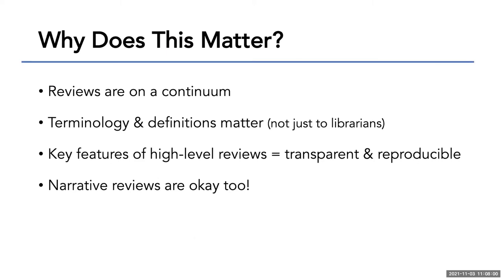Why does the distinction between these terms matter? Reviews are on a continuum — at one end you have very rigorous, high-level methodology like meta-analyses and systematic reviews, and at the other end you have those that are less rigorous but can still provide value, like a narrative review. These definitions matter beyond just librarians: if you send in what you consider a systematic review and it's actually more of a narrative review, a journal editor will reject your paper because they know what a real systematic review looks like. Key features of a high-level review are transparency, reproducibility, and rigor.